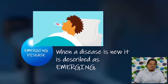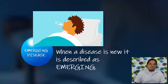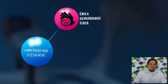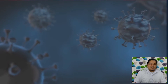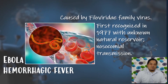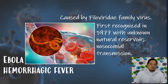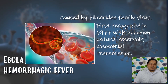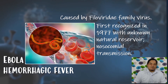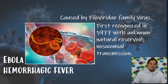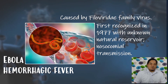Can you give an example of a disease that newly appeared before and even in the present that greatly affected many lives of people? These are examples of emerging diseases. 1. Ebola hemorrhagic fever — it is caused by the Filoviridae family virus that was first recognized in 1977, with unknown natural reservoir and nosocomial transmission.